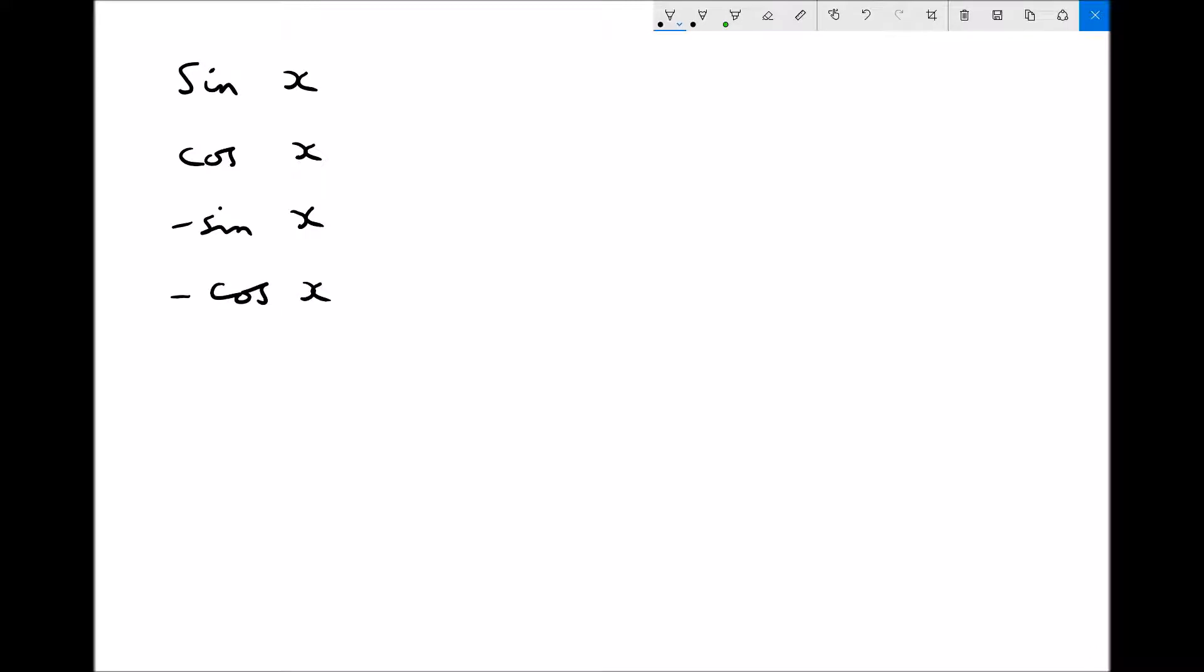Whenever we differentiate a function involving sin, that function becomes a cos function. Whenever we differentiate a cos function, it becomes a minus sin function. And whenever we differentiate a minus sin function, it becomes a minus cos function. Now this is a cycle, meaning that if we differentiate a minus cos function, it becomes a sine function and the process continues.